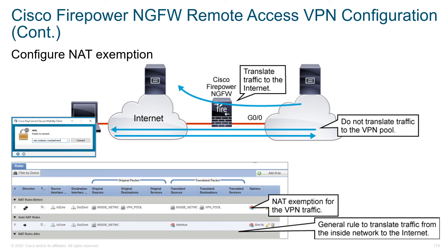NAT exemption means certain traffic should not be NATed. You might want to NAT everything going from the internal network to the outside, but if it's going from the inside to the VPN pool, don't NAT it. Remember the order of operations — most specific rules go up top. So specifically, traffic from the inside network to the VPN pool should come out unchanged, whereas traffic from the inside network going anywhere else should have the source IP changed to the outside interface IP — a typical PAT configuration. So there's your generic PAT rule and your specific NAT exemption rule.